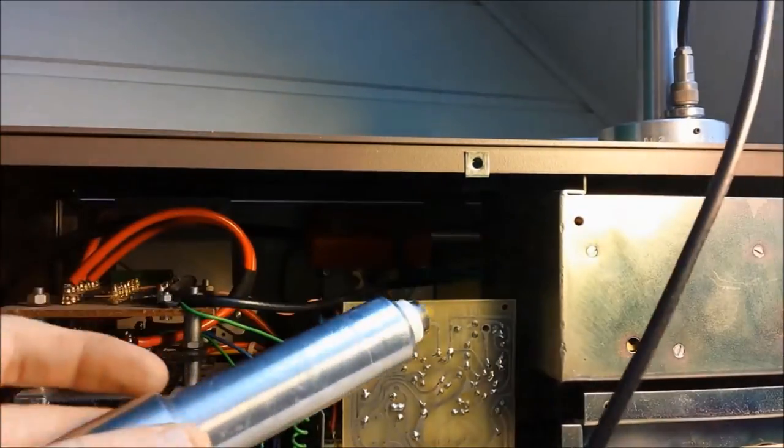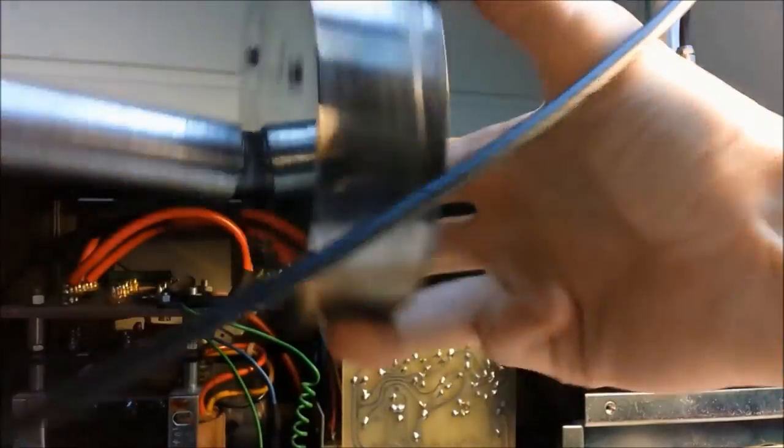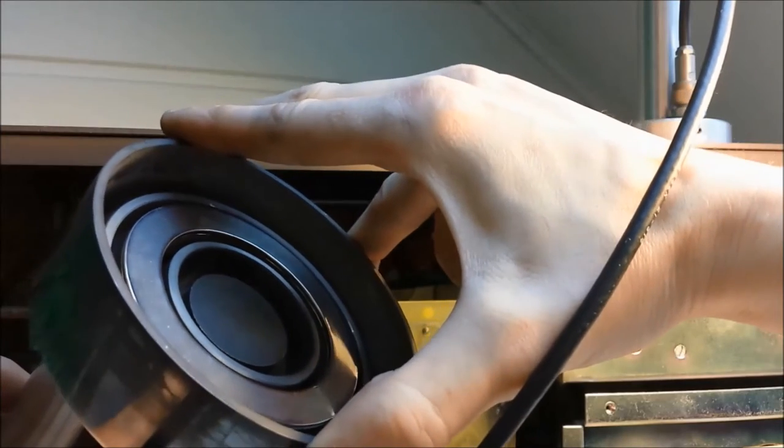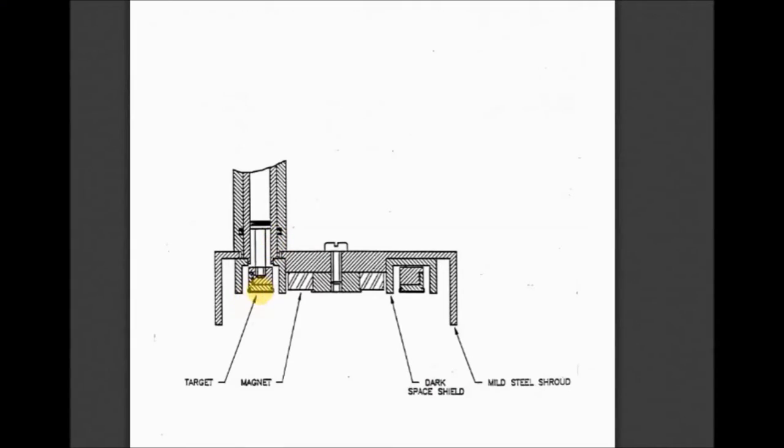The high voltage then goes to the magnetron, where the sputtering gas is ionized. And by swirling the ionized sputtering gas around in the magnetic field, it slams into the sputtering target and showers our substrate or specimen with the target metal.